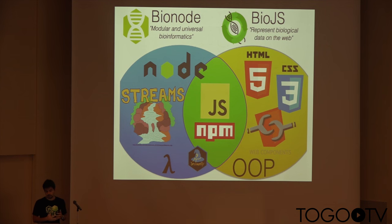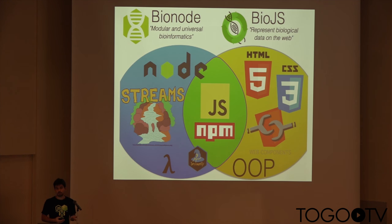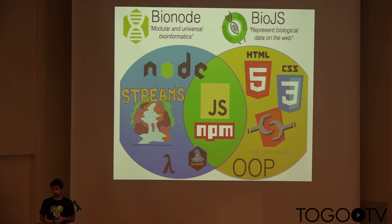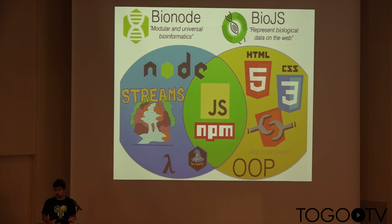There's another project doing JavaScript called BioJS. People sometimes ask what's the relation between Bionode and BioJS. Both projects are JavaScript and both use the same package manager, so they're easy to combine. But BioJS is more focused on representing biological data on the web — it's more HTML, CSS, and web components, and it's very object-oriented. Bionode, on the other hand, relies heavily on the Node.js API, streaming to get chunks of data, and functional programming. So both projects are quite different.